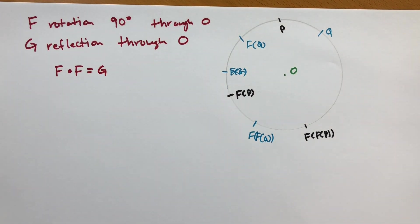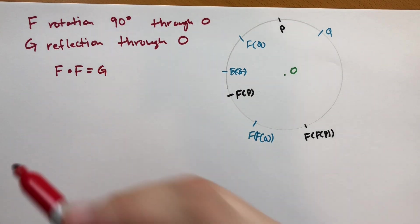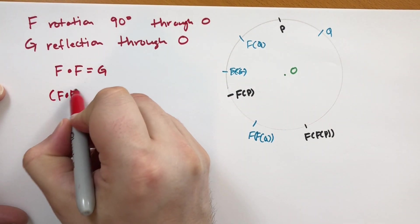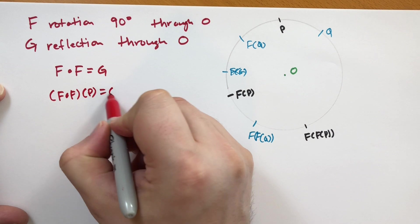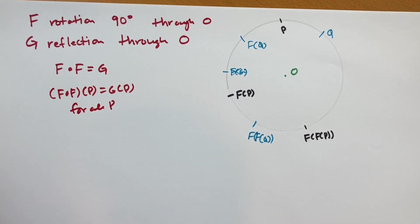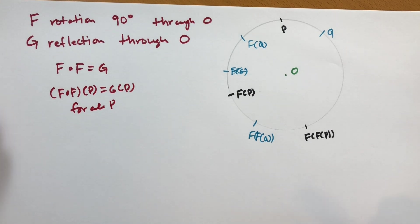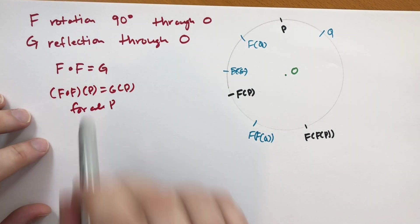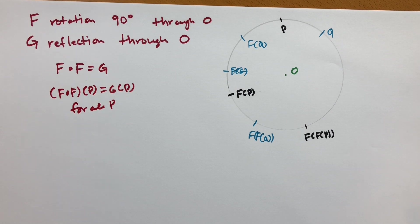The reflection of these points always go through the center. And so we know that F of F is also the reflection G. Those are the same isometries. Because we know that F of F of every point P is the same as G of P for all P, then we know that these are actually the same isometries.